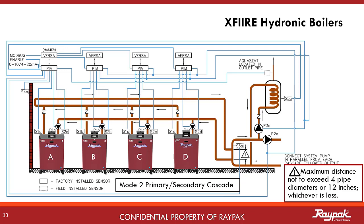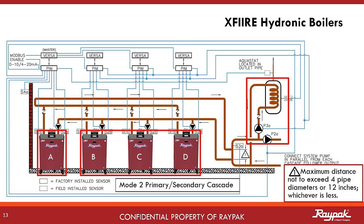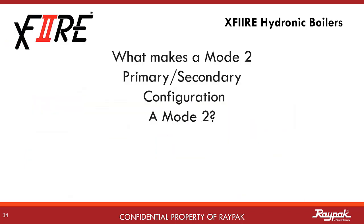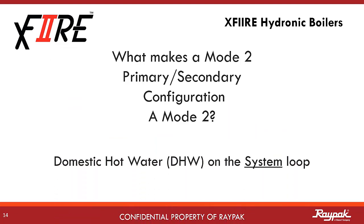Mode 2 is also possible in cascade. As with the single boiler system, the indirect domestic hot water tank is out on the system loop. When in cascade, there can be only one master boiler — the A boiler. The other boilers are the follower boilers. Always apply reverse-return logic to plumbing cascade systems: the first boiler to supply water to the system is the last on the return line from the system. What makes a Mode 2 primary-secondary a Mode 2? You have an indirect domestic hot water tank out on the system loop.